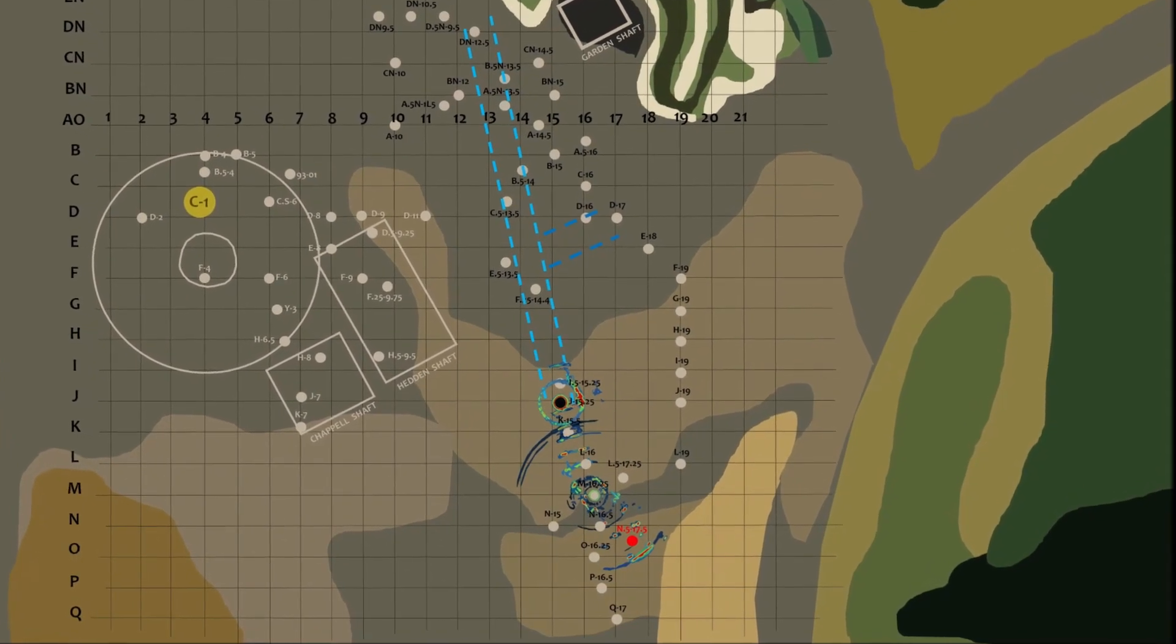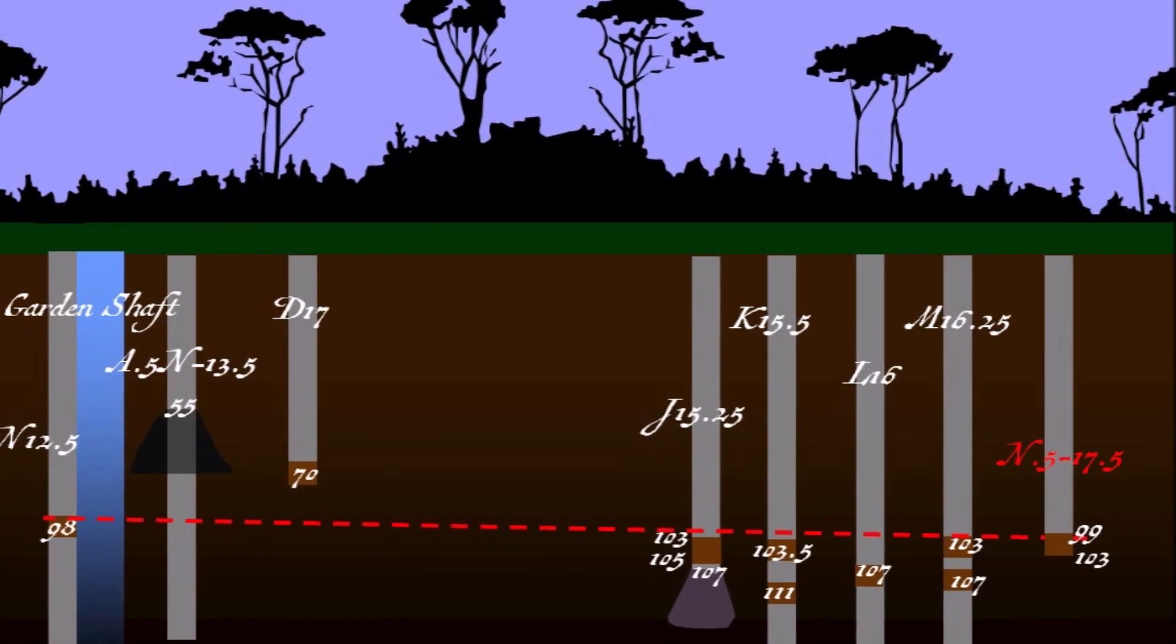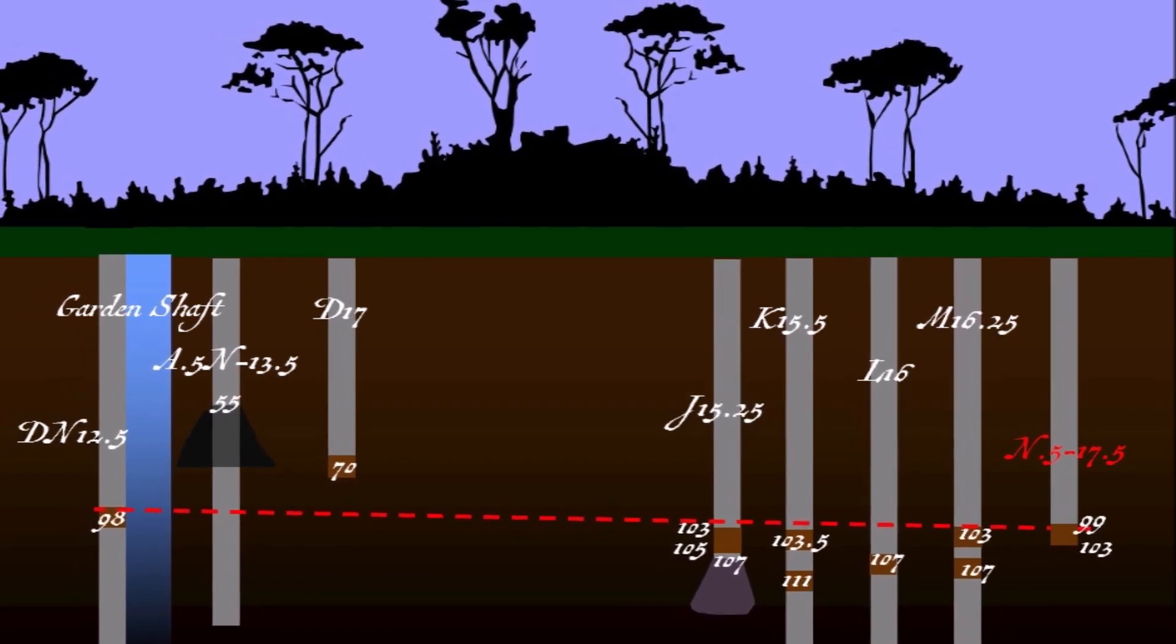Roughly halfway through the episode, a core sample reveals wood from a depth of 99 to 103 feet, perhaps a piece of the mysterious underground tunnel which the crew has been following throughout the season.